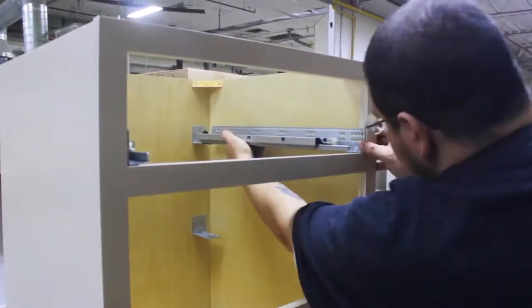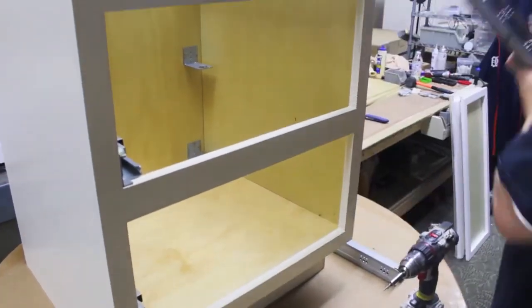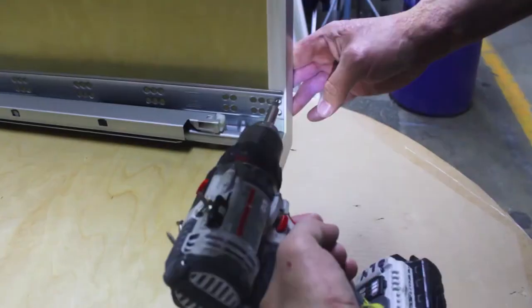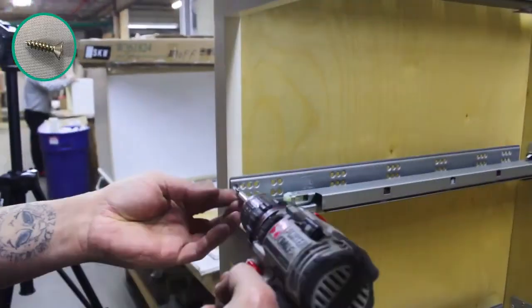Now take your drawer glides and slide them into place on your L brackets. The front of the glide should rest on the face frame. Once all your glides are in place, they can be secured to the inside of the face frame using predetermined dimples.